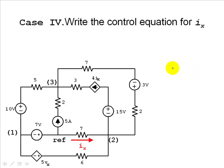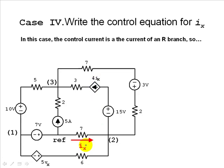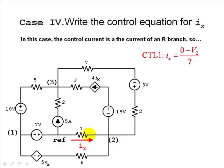Case 4: the current source depends on IX, which is the current in an RV branch. That current IX equals the reference voltage minus V2, divided by 7. That is your equation.